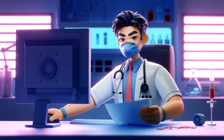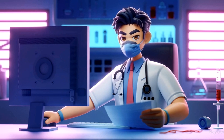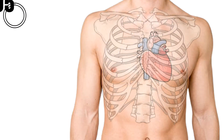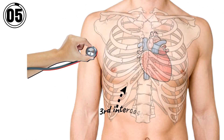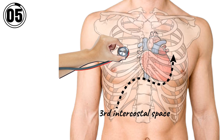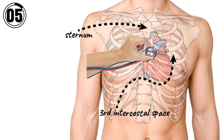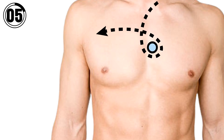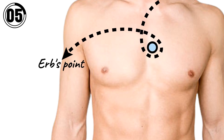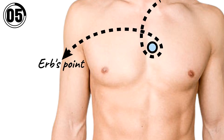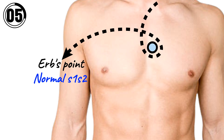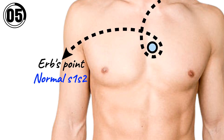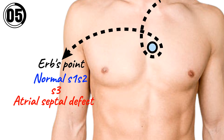Now we will see the fifth and last auscultation point. The stethoscope should be placed at the third intercostal space and the right border of the sternum. This auscultation point is known as Erb's point and it is best to hear the normal S1-S2 sound and abnormal heart sounds such as S3 and atrial septal defect.